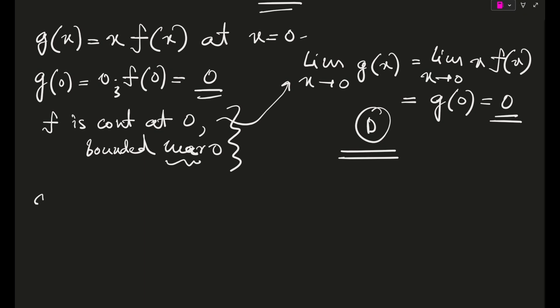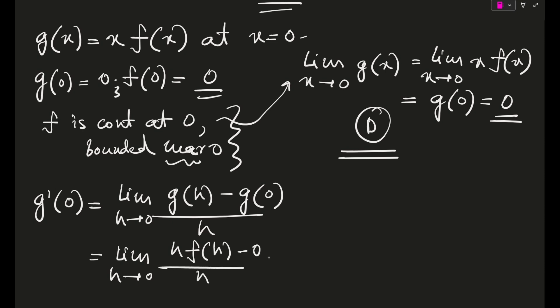So for the differentiability we will use the very common definition of g dash 0, which will be limit h tends to 0 of g of h minus g of 0 by h minus 0, which is h. So this thing will come out to be limit h is tending to 0 of h times f of h minus 0 by h, which is equal to limit of h is tending to 0 of f of h, which is equal to f of 0.